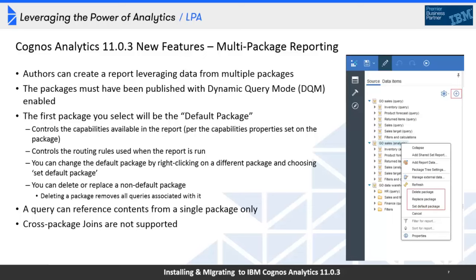You can't cross the streams in a single data object — you can't take a data item from package one and a data item from package two and drop them in the same list, cross tab, or chart. Queries now have a property for which package is associated with them. The first data item you add to a query sets that package association. You can't add data items from another package to that query. So cross-package joins are not supported.